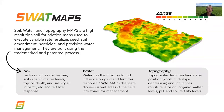So what are SWAT maps? SWAT maps are soil, water, and topography maps. They're a soil foundation map typically used to do variable rate fertilizer, seed, soil amendments, soil applied herbicides, and even variable rate irrigation.